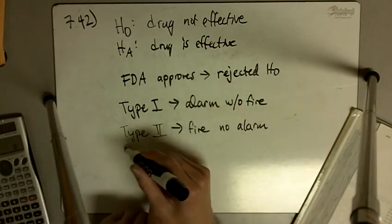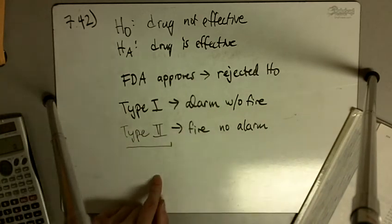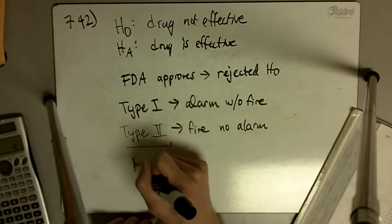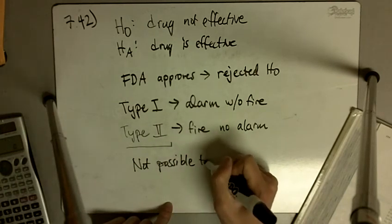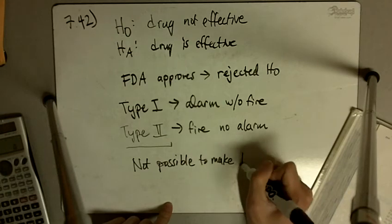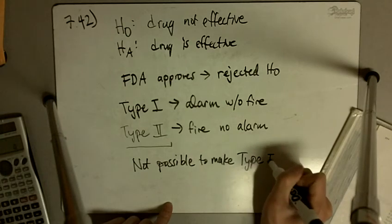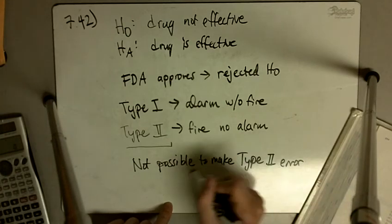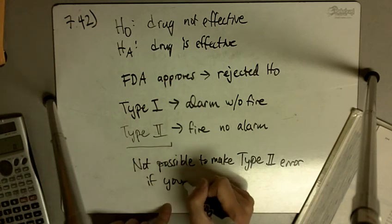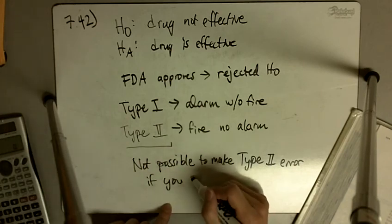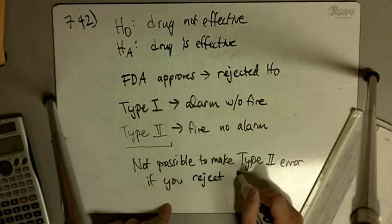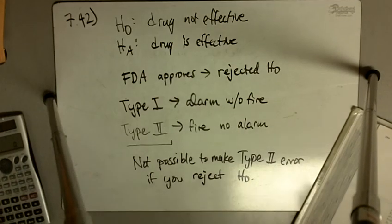If we rejected the null, we could not have made a Type II error. It's not possible to make a Type II error if you reject the null, if you reject H0.